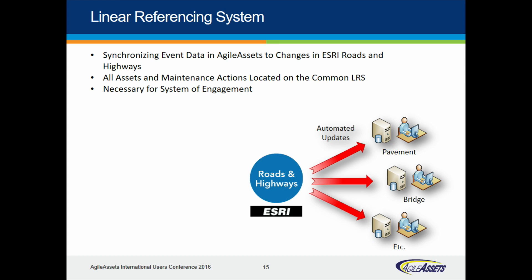Linear referencing is an important part of building a big asset management system with all secondary assets, pavements, and bridges. We want everything to be accessible through a map. As we update the linear referencing system, all asset-related location data will automatically be synchronized through the Esri Roads and Highways application, so all assets will be located on one common LRS.